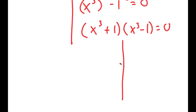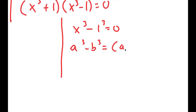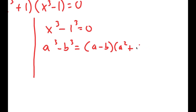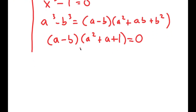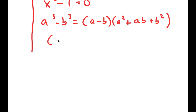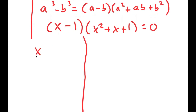Now for x to the power of 3 minus 1 equals 0, I'm going to rewrite this as x to the power of 3 minus 1 to the power of 3 equals 0, so I can use the property a cubed minus b cubed equals a minus b times a squared plus ab plus b squared. So this turns into x minus 1 times x squared plus x plus 1 is equal to 0, which gives me two more equations.